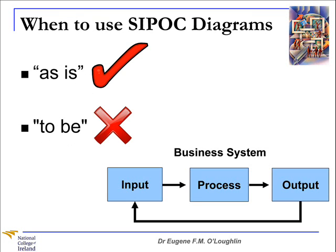So when should you use a SIPOC diagram? It should only be used to describe the existing process as-is, and not the to-be process. It's a particularly useful tool when you need to answer questions such as: What are all the inputs into the process? Who supplies the inputs? What requirements are placed on these inputs? What are all the outputs? Who are the real customers? And what are the requirements of these customers? At all times, we want to concentrate on the relevant elements relating to the process we're looking to improve.